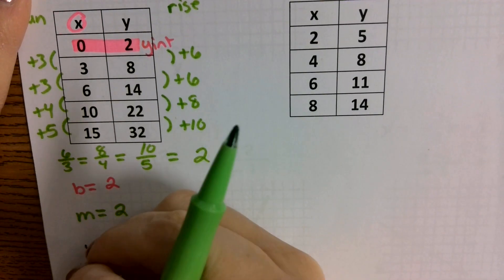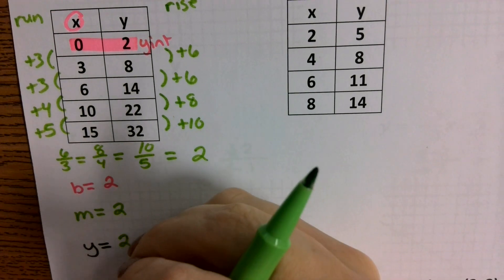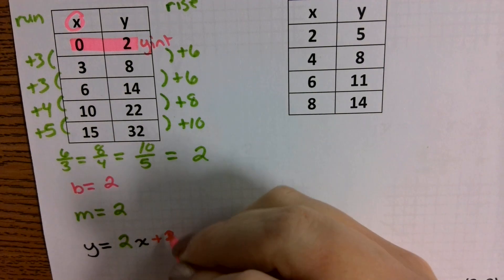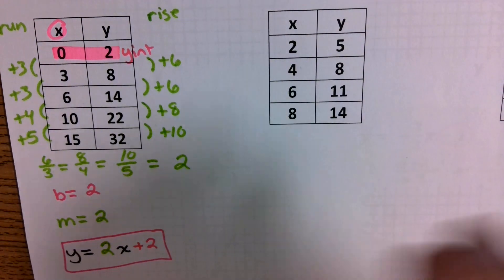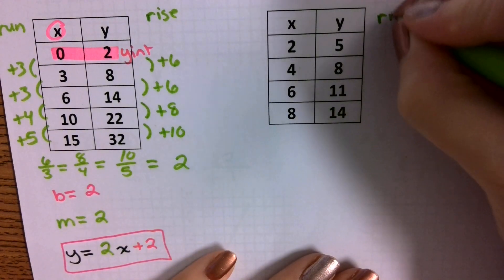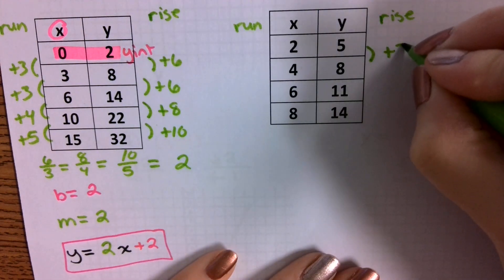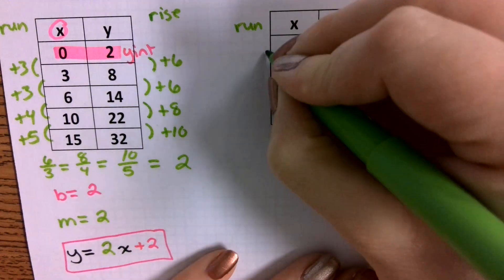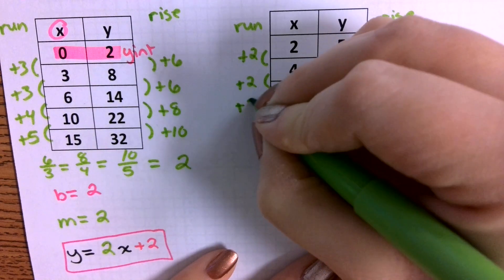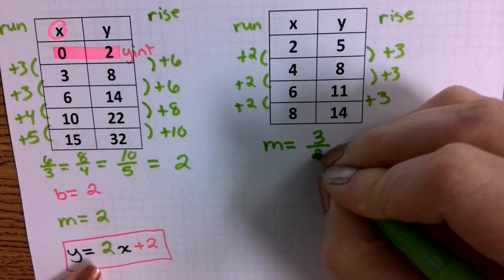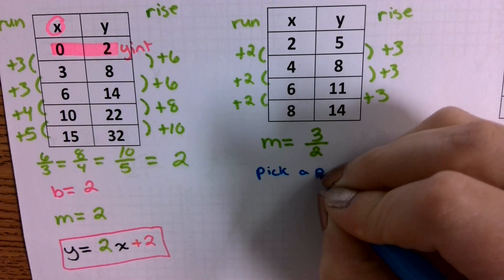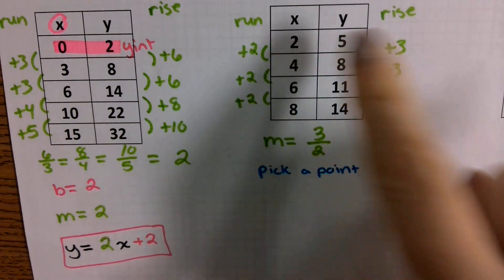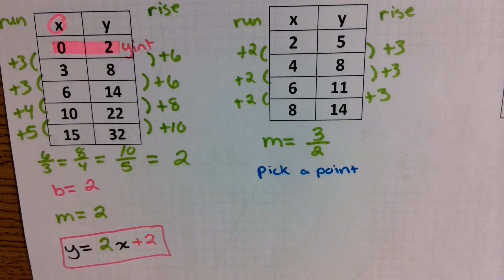So I plug it into my equation: y = 2x + 2. Now if the table doesn't give you the y-intercept directly, you first find the slope. Here, the rise increases by 3 each time and the run increases by 2 each time, so my slope is 3 over 2. Then I pick any point — it doesn't matter which. I can do (2, 5), (4, 8), (6, 11), or (8, 14). I just need to pick one and substitute.